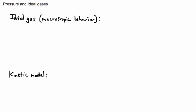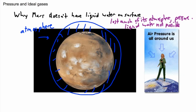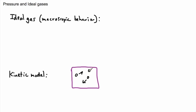For ideal gases, we look at a volume of gas in a box — the kinetic model. In this little box we have little molecules, each going in different directions. In real life, though, gases aren't quite like this.